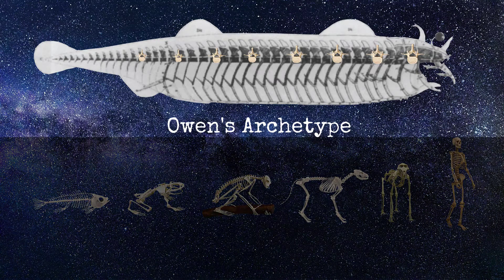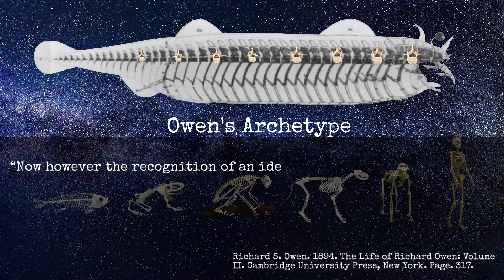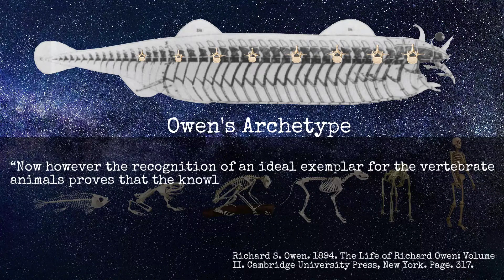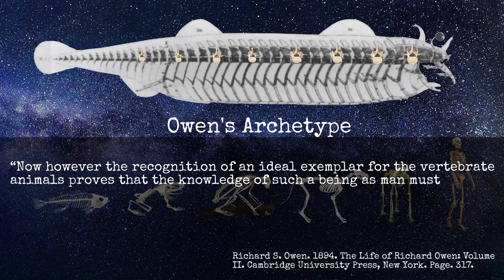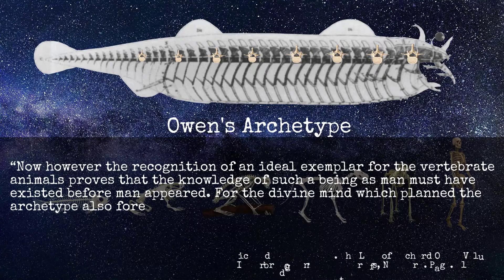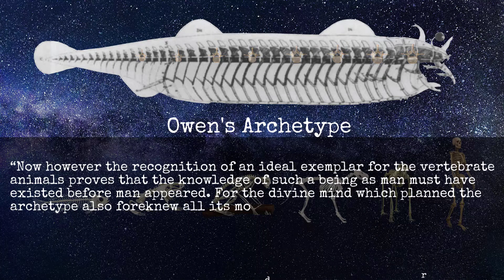He says this: "Now, however, the recognition of an ideal exemplar for the vertebrate animals proves that the knowledge of such a being as man must have existed before man appeared. For the divine mind, which planned the archetype, also foreknew all its modifications."